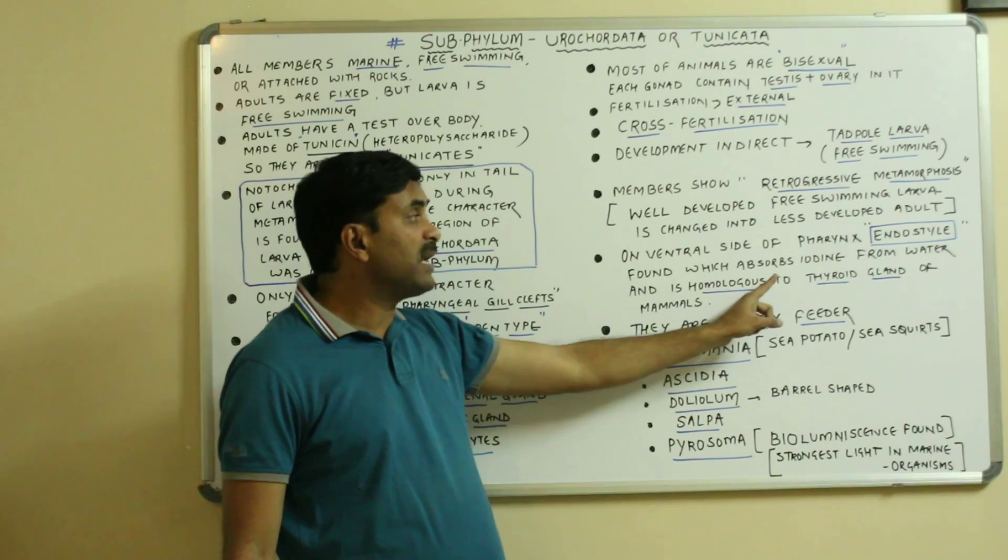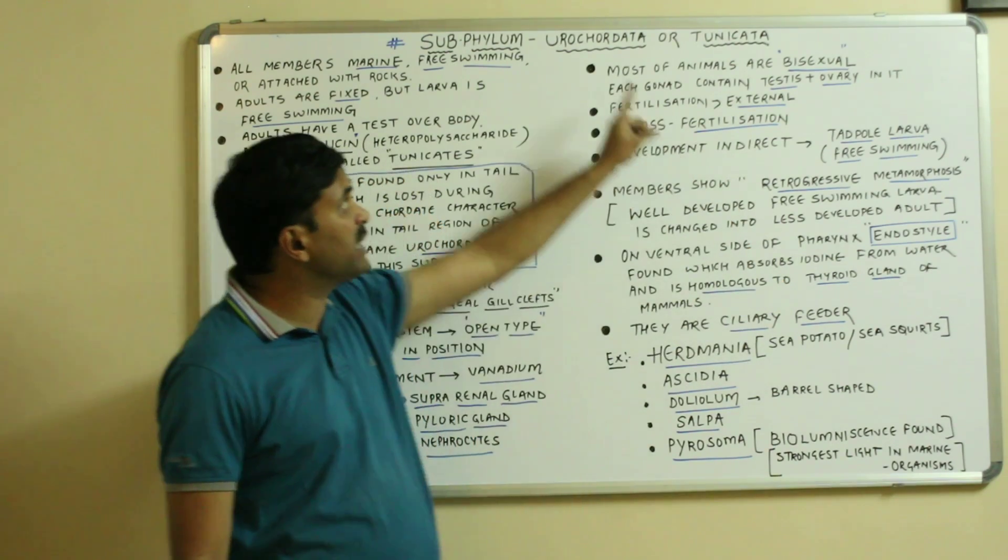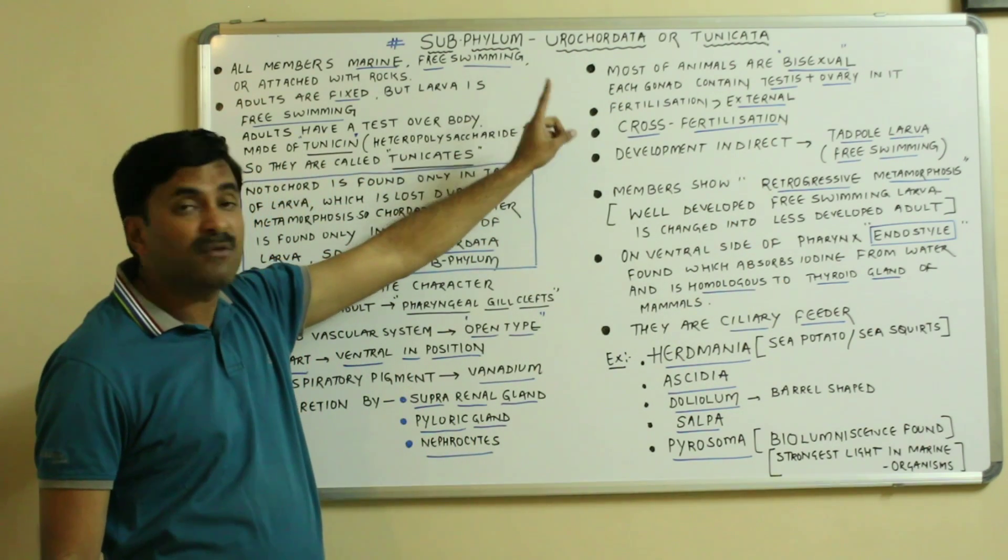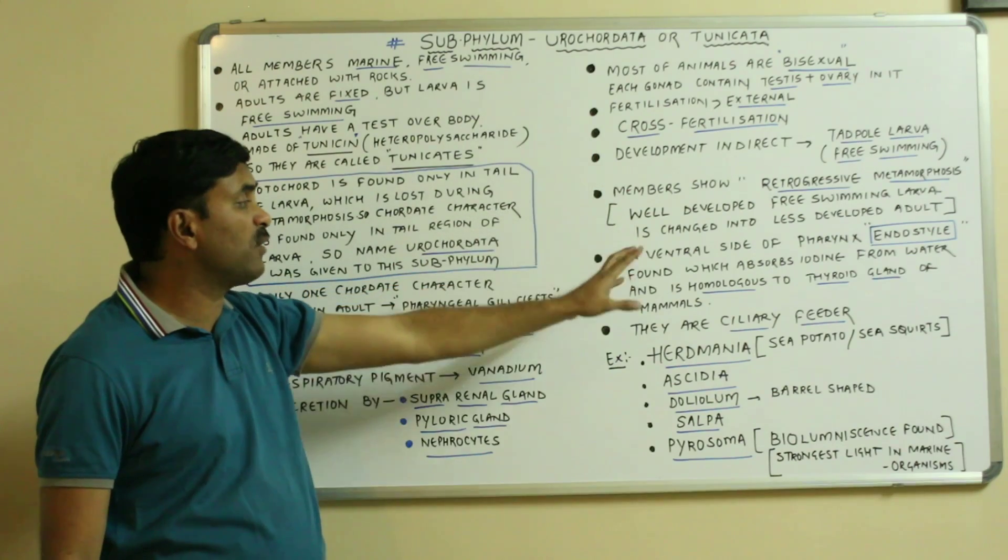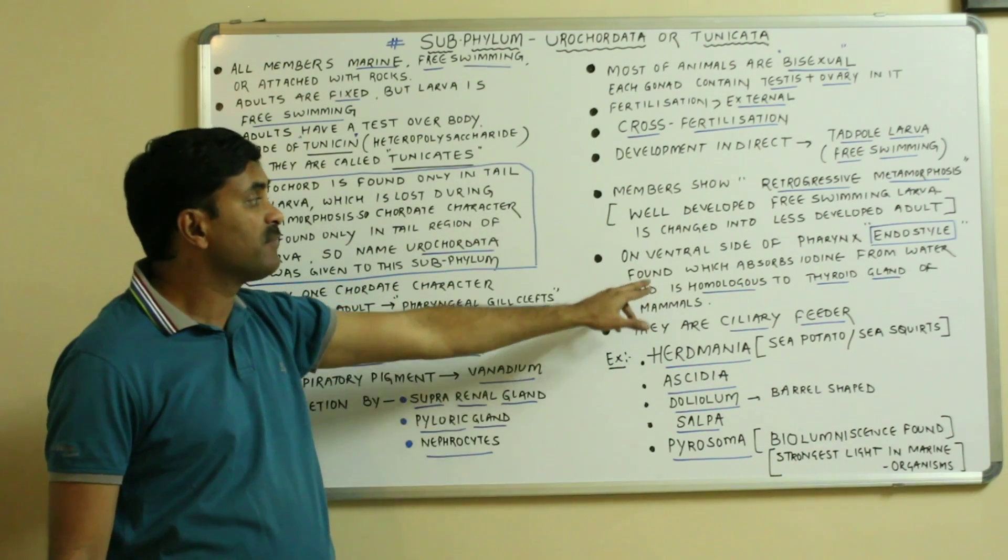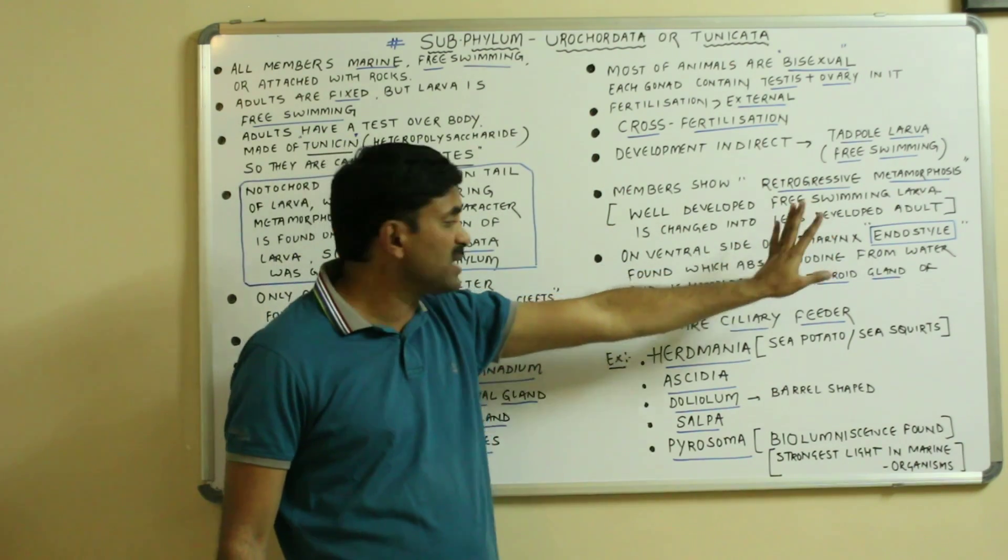This question was asked in the exam that name a structure found in the urochordates which is homologous to the thyroid gland of the higher mammals that is known as the endostyle.